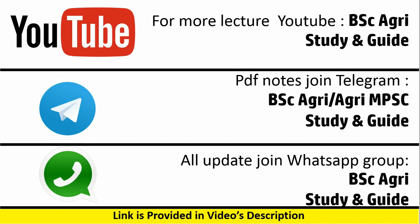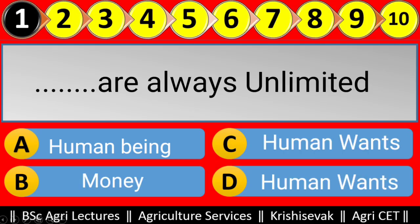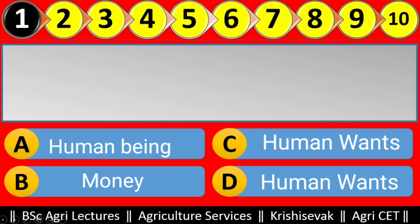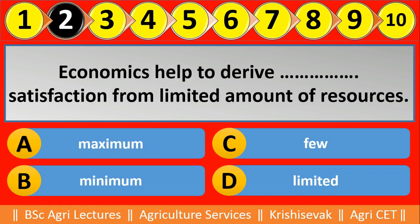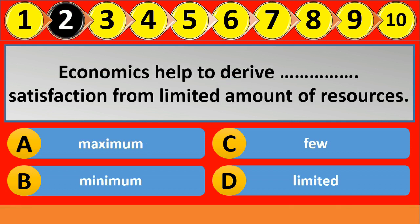First MCQ: Question 1 — dash dash are always unlimited. Options are: human being, money, human wants. The right answer is human wants are always unlimited. Let's see question number second: Economics helps to derive dash dash satisfaction from a limited amount of resources.